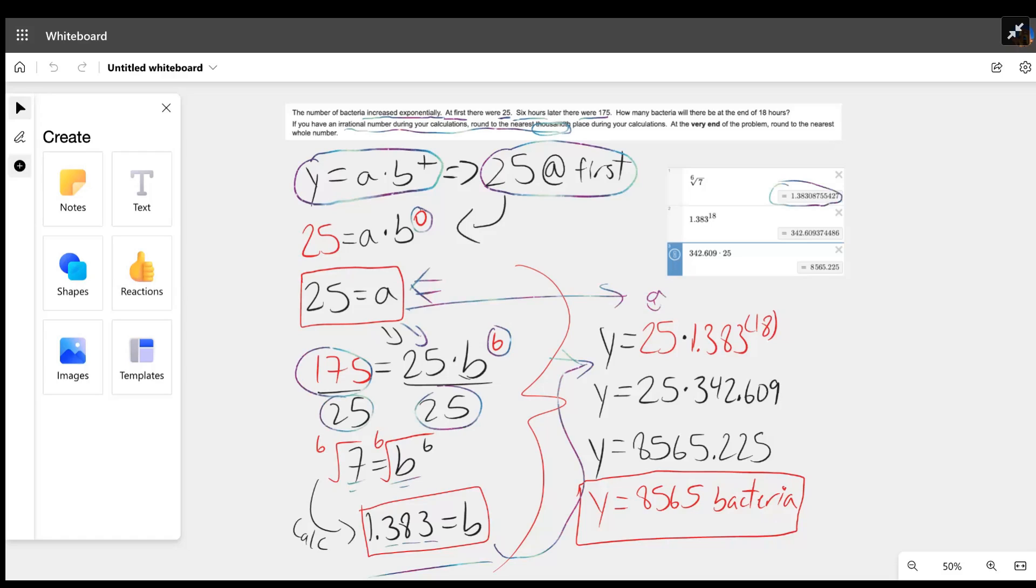The value of t now is 18 because the ultimate question is how many bacteria would be at 18 hours. We've plugged 18 into t. We have to calculate this here first. After we calculate, we have 342.609 when we round to the nearest thousandth. That value times 25 brings us to 8565.225, once again three values after the decimal because of the thousandth place.